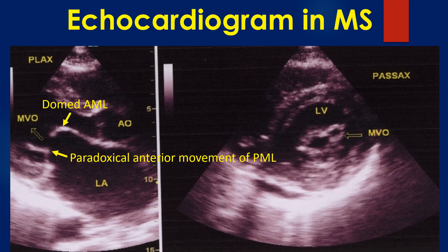The left panel shows the parasternal short axis view. The mitral orifice is seen within the cross section of the left ventricle. The anterior and posterior leaflets are seen in cross section and are thickened. The commissures are fused.